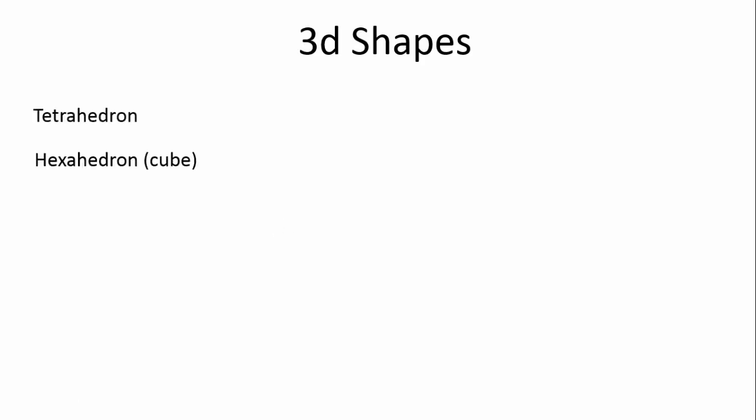We're going to first look at a tetrahedron, a hexahedron, which is also known as a cube. We're going to look at an octahedron, a dodecahedron. Don't get too stressed out if you can't say these words. I can barely say them myself sometimes. It's not too important. An icosahedron, and then we're going to look at what they all mean.